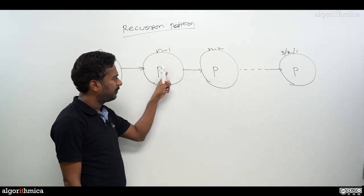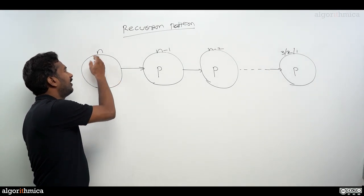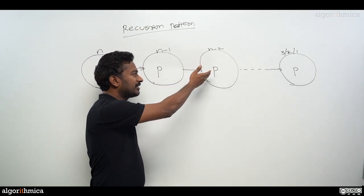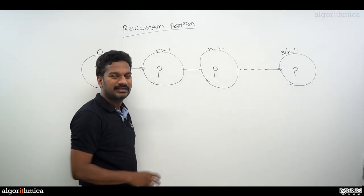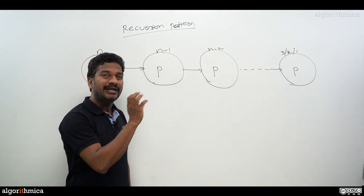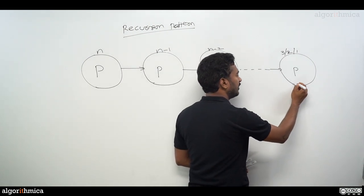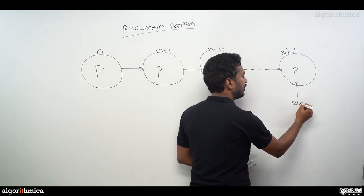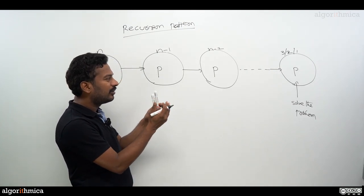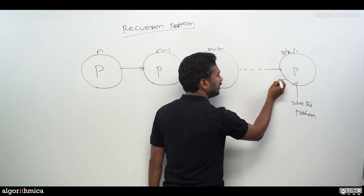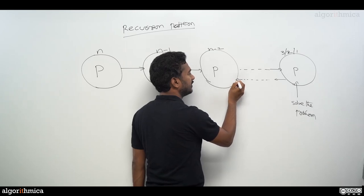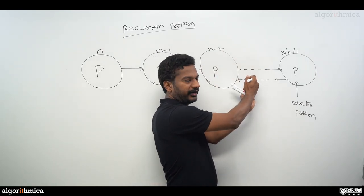We keep reducing the problem P of size n to different sizes — the problem P is exactly the same. So you're not solving immediately; you reduce from size n to n minus 1, then again to n minus 2, continuing until you reach a very small size where you can directly solve the problem. Once you solve the problem at that small size, you then pass the solution back to the next stage, the bigger sub-problem, and keep building up.